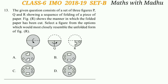Now question 13. The given question consists of a set of three figures P, Q, and R showing a sequence of folding of a piece of paper. Figure R shows the manner in which the folded paper has been cut. Select a figure from the options which would most closely resemble the unfolded form of figure R. If we cut the paper as given in figure R and unfold it, it will be option C.